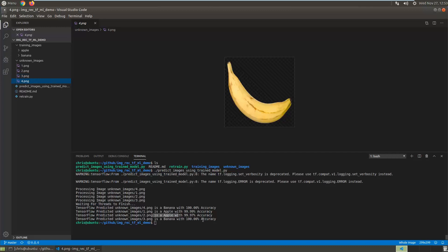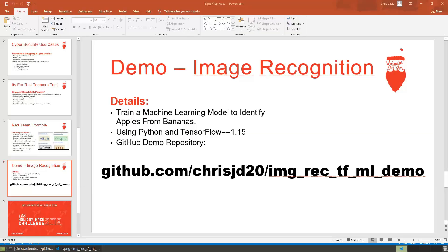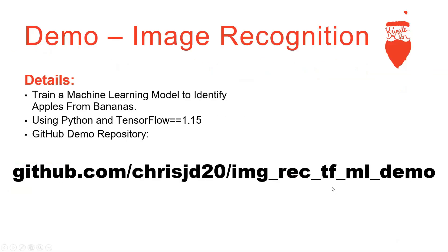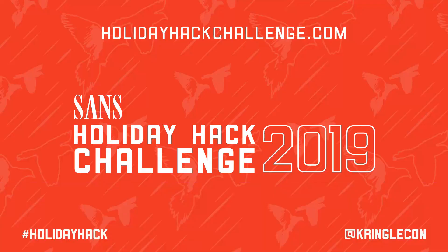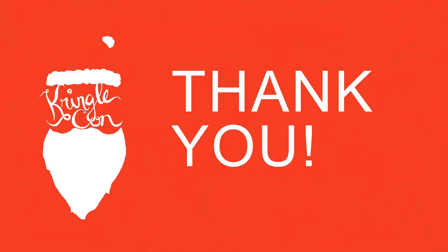That just goes to show you — especially in the example of image recognition — it's incredibly easy to quickly identify images using machine learning. This is a very simple example, but you could potentially apply this to almost any project that requires image processing. I hope you enjoy your Holiday Hack Challenge for KringleCon 2019. Thanks.